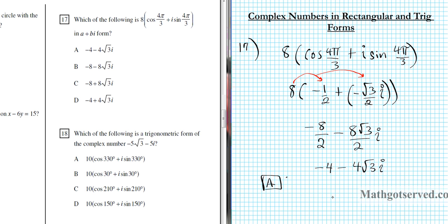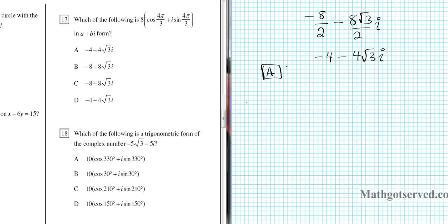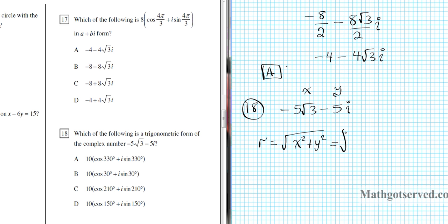Let's move on to number 18. Now we have a complex number in rectangular or a plus bi form and we have to convert it into trigonometric or polar form. The number under consideration is negative 5 root 3 minus 5i. We can look at this as x and y. We need to find r and theta. Using our formula, r is the square root of x squared plus y squared. So r is the square root of negative 5 root 3 squared plus negative 5 squared.